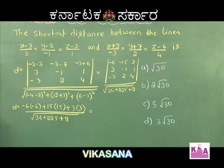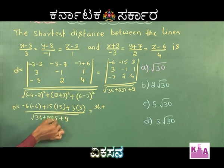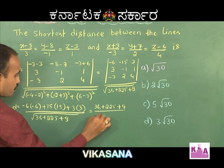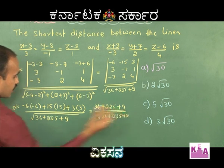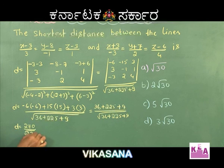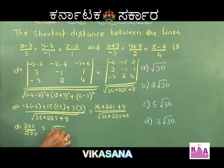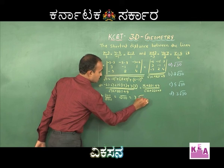We get 6×6 = 36, 15×15 = 225, plus 9, all divided by √(36 + 225 + 9). This simplifies to 270 divided by √270, which equals √270 = 3√30.